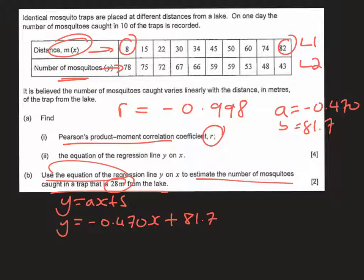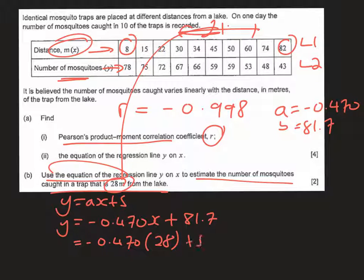So 28 does lie within this range, so we can use this to make a reliable estimate. We're just going to substitute that in: negative 0.470 times 28 plus 81.7. And that will give us an answer of 68.6 mosquitoes, so you can either have 68 or 69 to get the correct value and get the mark there.